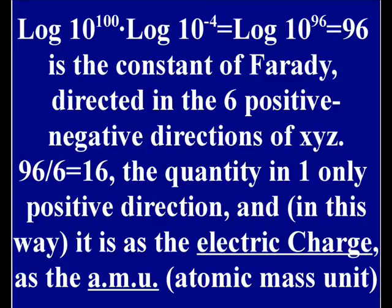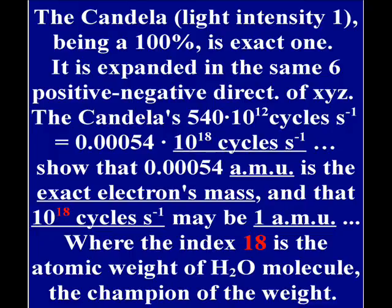This calculus arrives to the constant of Faraday, which is directed in the 6th positive-negative direction of the Cartesian term. 96 divided by 6 is the quantity in one only positive direction, and in this way it is as the electric charge, as the atomic mass unit.